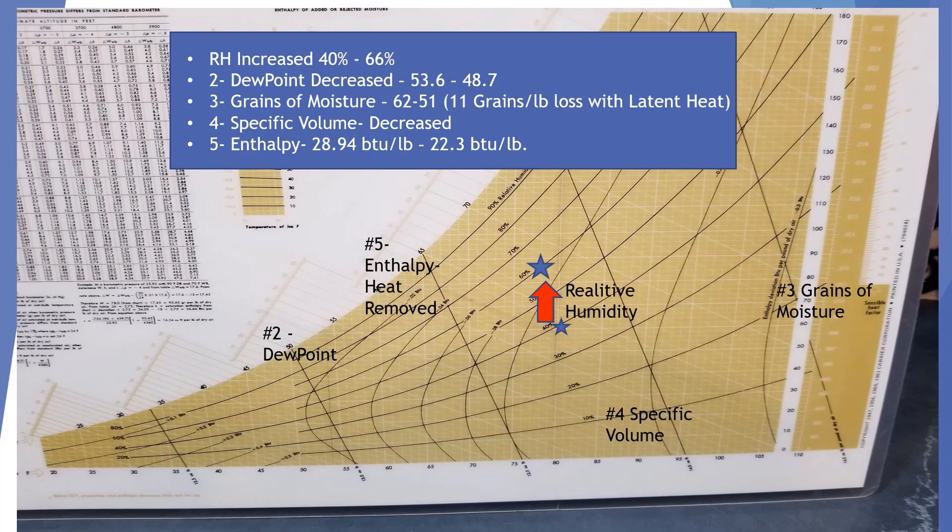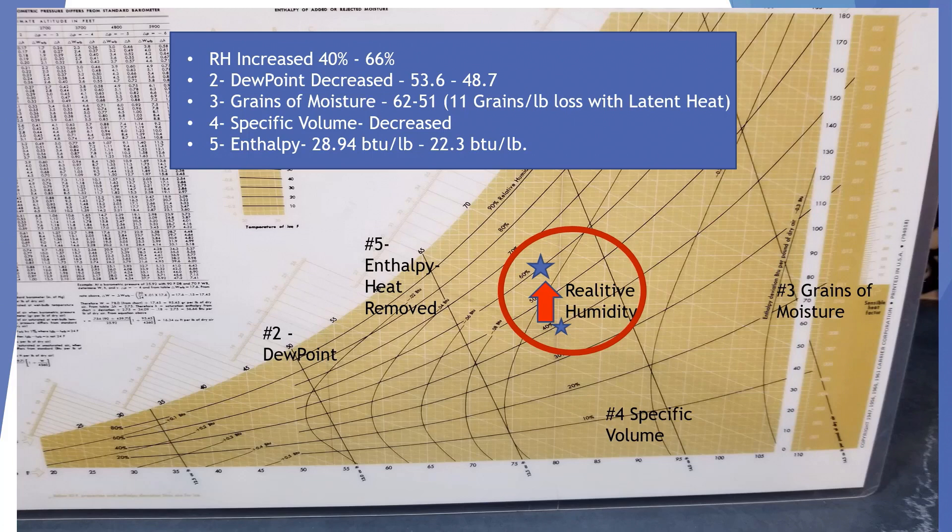So by comparing our numbers that we had on the previous chart, we can see that our relative humidity has increased from 40% to 66%. Our dew point decreased from 53.6 to 48.7. Our grains of moisture went from 62 to 51 grains. So that was 11 grains per pound that we lost with the latent heat process.